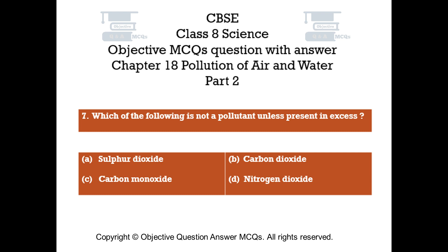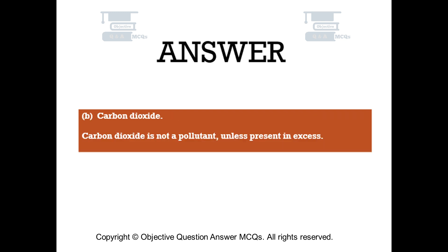Question number 7. Which of the following is not a pollutant unless present in excess? Option A: Sulfur dioxide. Option B: Carbon dioxide. Option C: Carbon monoxide. Option D: Nitrogen dioxide. The right answer is Option B — Carbon dioxide. Carbon dioxide is not a pollutant unless present in excess.